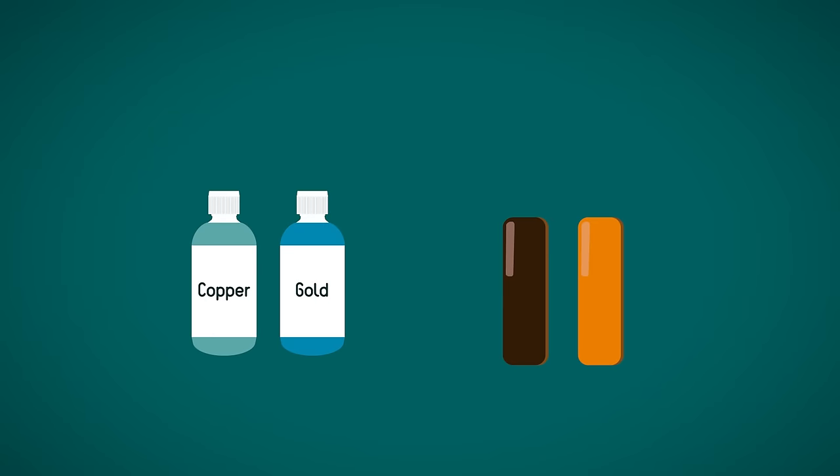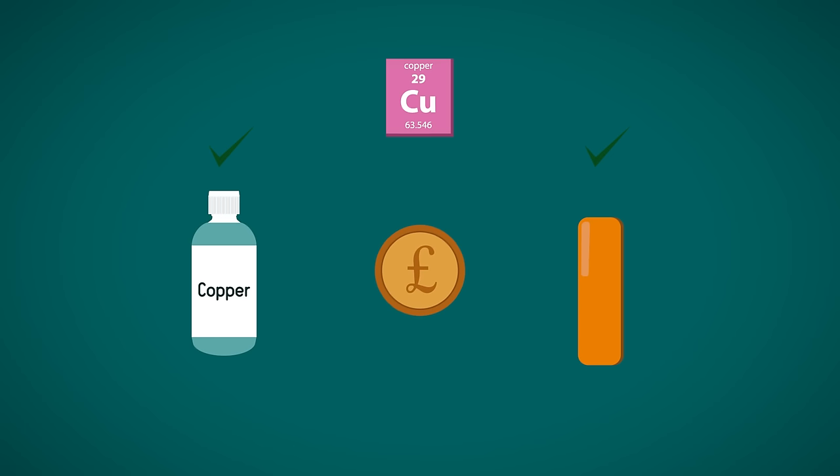The electrodes and electrolyte are carefully chosen based upon what metal you are plating with. So if you want to copper plate another metal, you will use a copper-based electrolyte solution and have a copper anode. The copper for the plating comes from the electrolyte solution, which in turn has its stocks replenished by the copper anode.